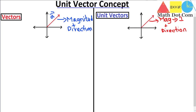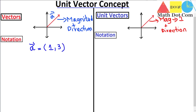Now let's look at their representation or notation. A vector is represented by an arrow at the top, for example, vector a equals (1, 3). A unit vector is written with a hat or cap at the top, like â equals x·i plus y·j in two dimensions. In three dimensions we add a z component with k. The key difference in notation is: arrow on top for a vector, and hat or cap for a unit vector.